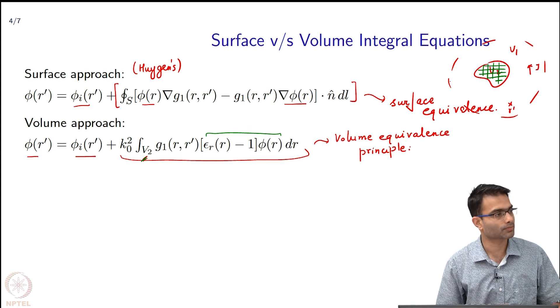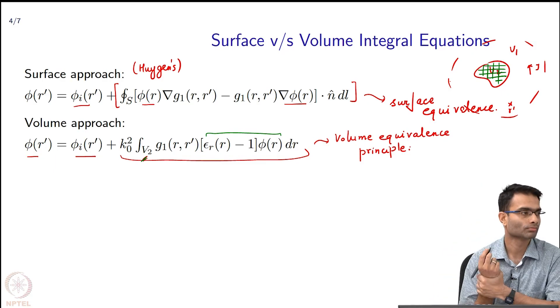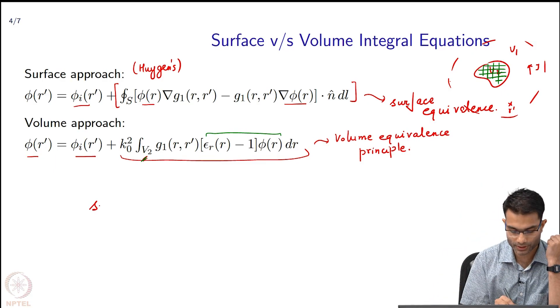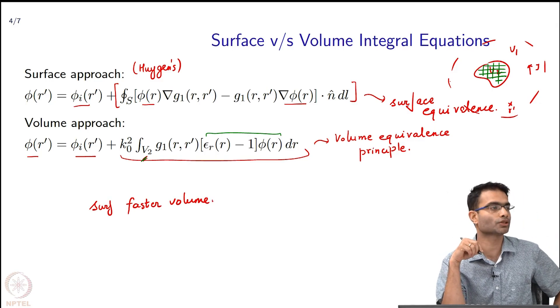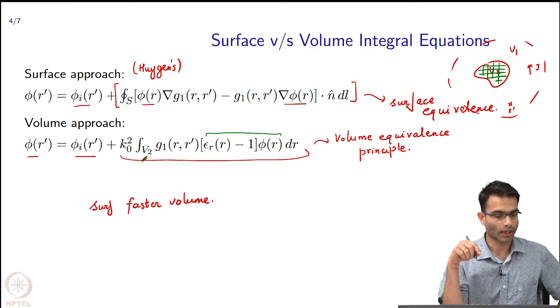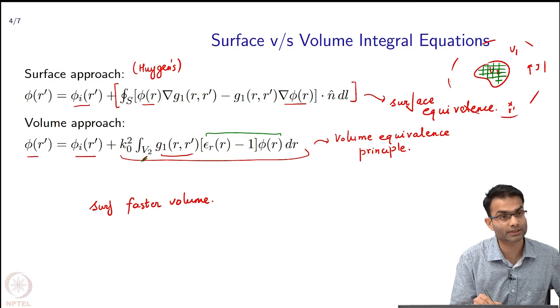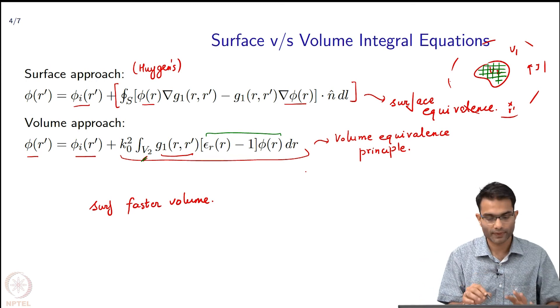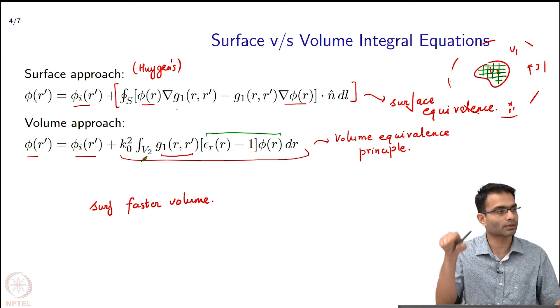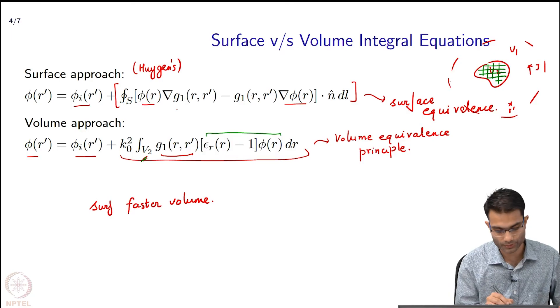Any other thing that sort of stands out for you over here? Which one will take more or less time to evaluate? The first one obviously. Surface is faster than volume because every time you change your observer location r', I have to recalculate this whole integral because when r' changes this Green's function changes, therefore the whole integral also changes. I have to evaluate over a surface whereas the first one I have to evaluate over a line.